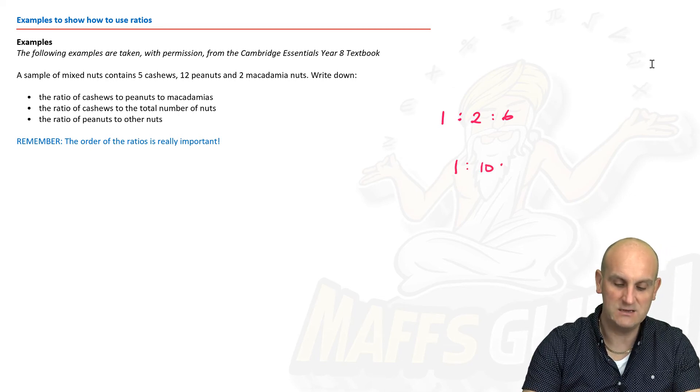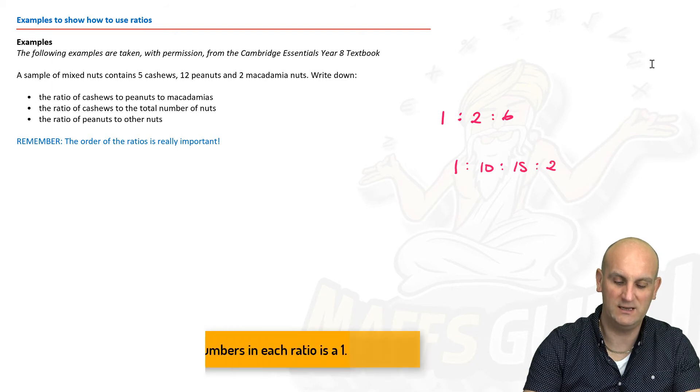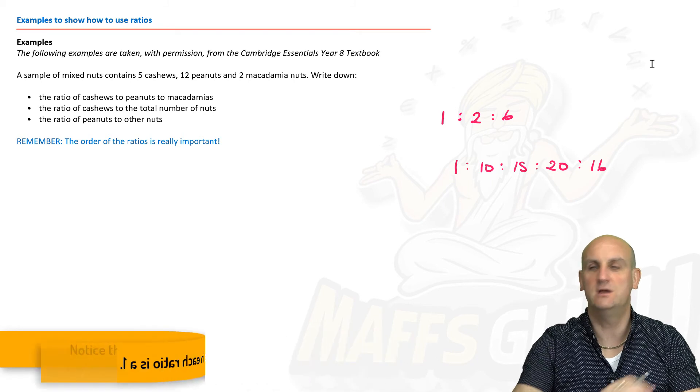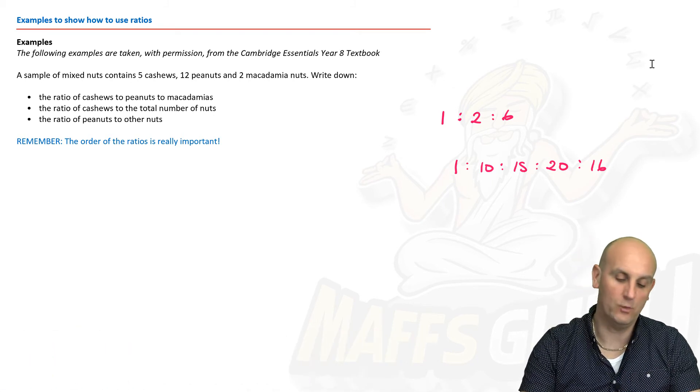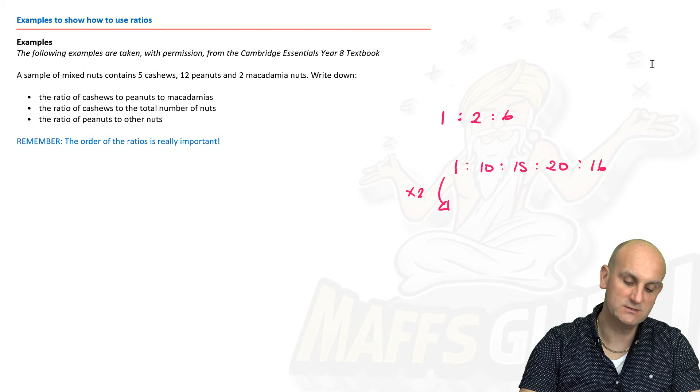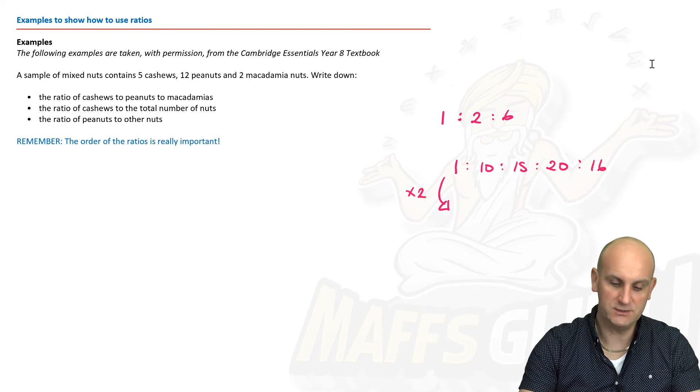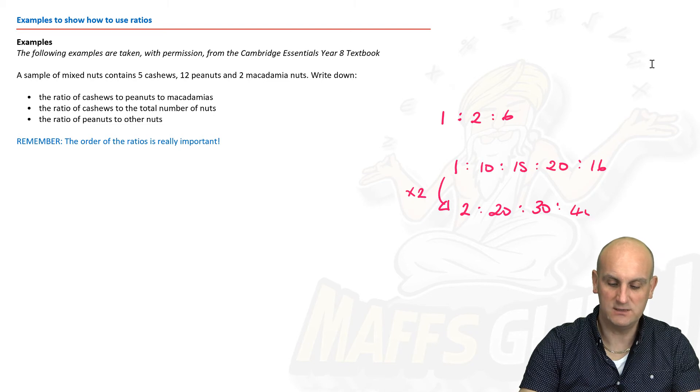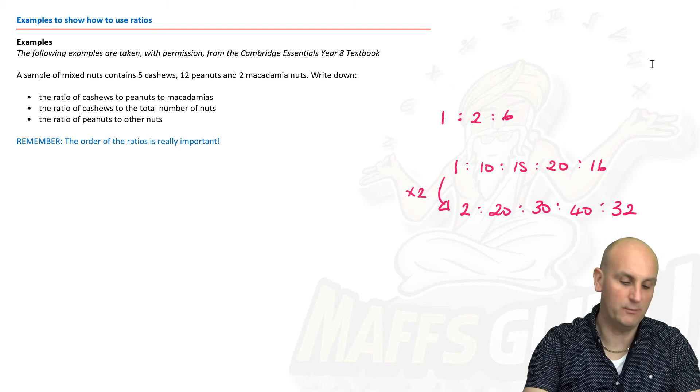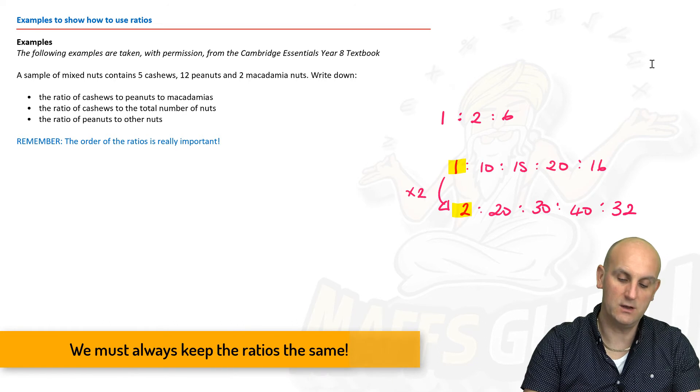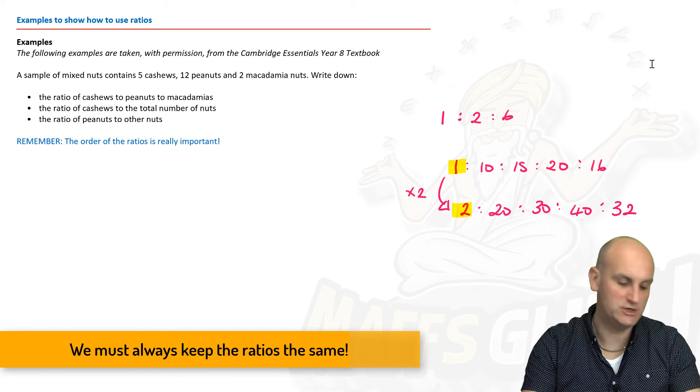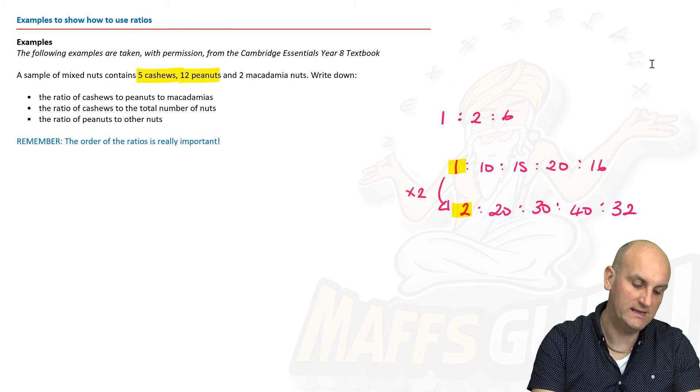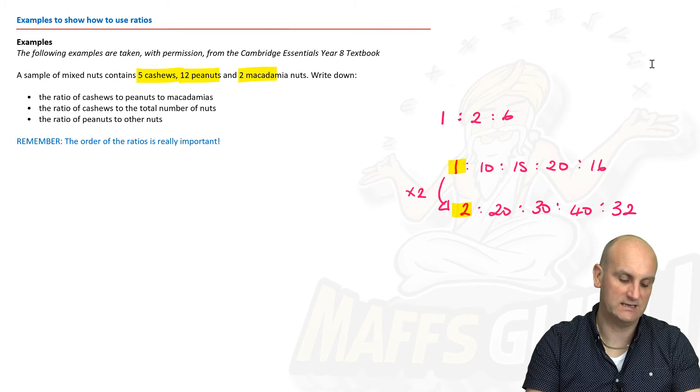We can actually have a ratio of one colon two colon six. We can have a ratio of one colon ten colon fifteen colon twenty colon sixteen. Doesn't matter, you know, ratios can go on forever and ever. What matters for this question is if I was to double that, I'd have to double all the ratios. That would be two to twenty to thirty to forty to thirty-two. Otherwise if you only doubled one of those numbers, then it would no longer be of the right ratio.